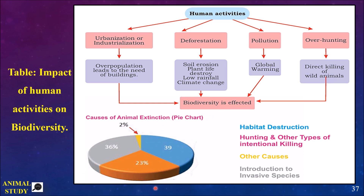A pie chart shows the main causes of animal extinction: 39% is due to habitat destruction — animals' homes are destroyed. 23% is due to hunting — animals are intentionally killed. Some percentage is due to invasive species being introduced — for example, bringing a new species to a place where other species already live, causing food scarcity and conflict. There are also 2% other causes. These are the main reasons animals are heading toward extinction.